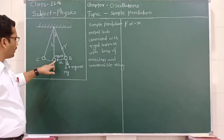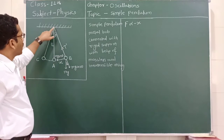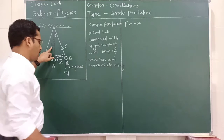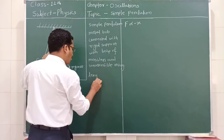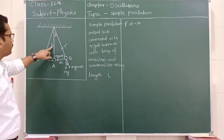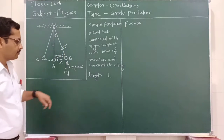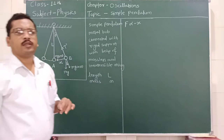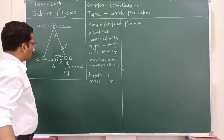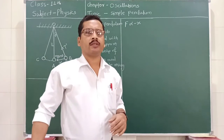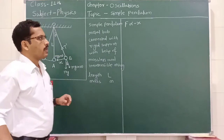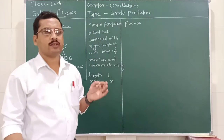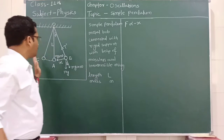For this proof, we consider a simple pendulum: a metal bob of mass M connected to a rigid support with a massless and inextensible string of length L. When this simple pendulum starts its motion, initially it is at the equilibrium position. At the equilibrium position, all forces balance each other, so the resultant force on the metal bob is equal to zero.